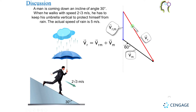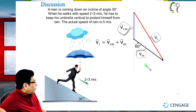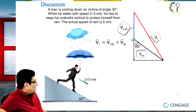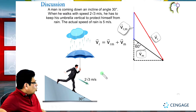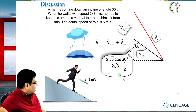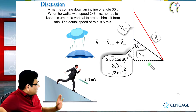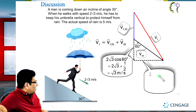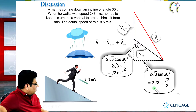We know the magnitude of the velocity of the man is 2√3 meters per second. We can find its vertical and horizontal components. The vertical component equals 2√3 × cos60° = 2√3 × (1/2) = √3 meters per second. The horizontal component equals 2√3 × sin60° = 2√3 × (√3/2) = 3 meters per second.